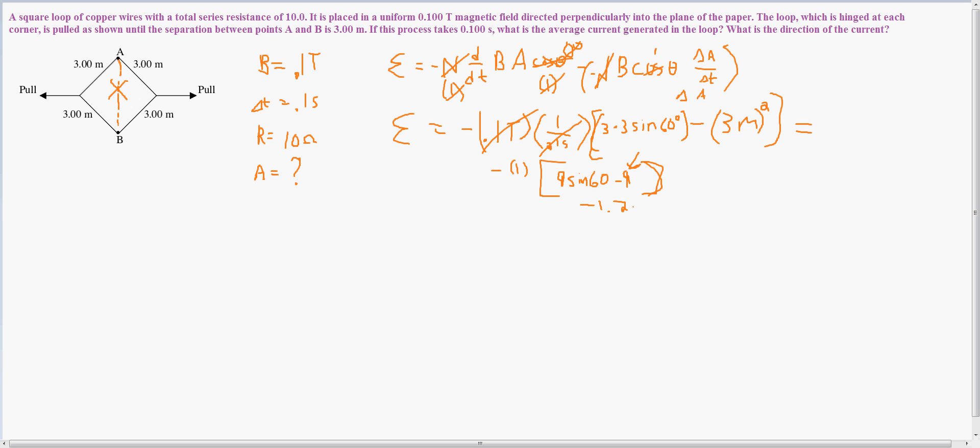This will be tesla per second. This will be meter squared. And then these two negatives cancel, so we end up with 1.2 tesla meters squared divided by seconds, which is the same units as volts.